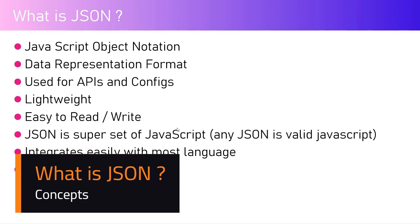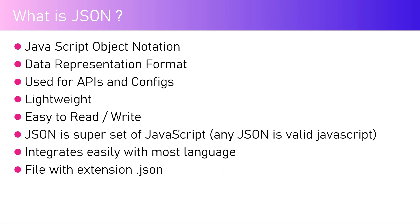In this video I'm going to talk about JSON. JSON is basically JavaScript Object Notation — it's a data representation format through which you can transport data from one system to another. It has its own extension, dot JSON, and it's mainly used for APIs and configuration files. It is lightweight, easy to read and write, and its competitors are YAML and XML.